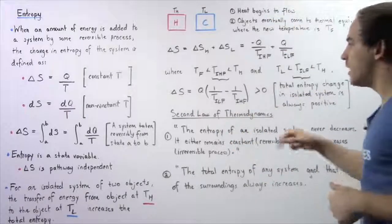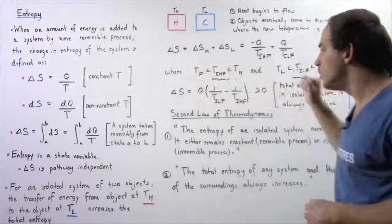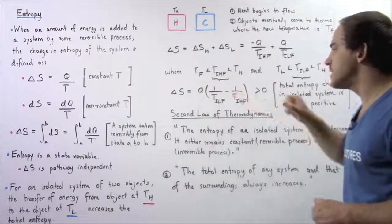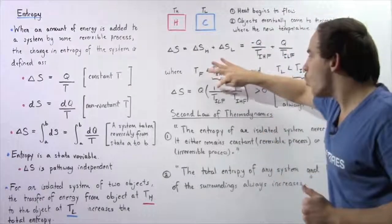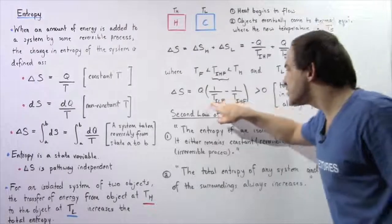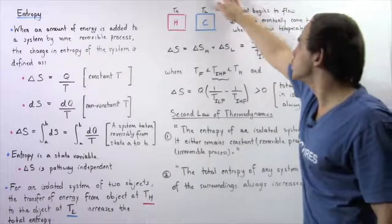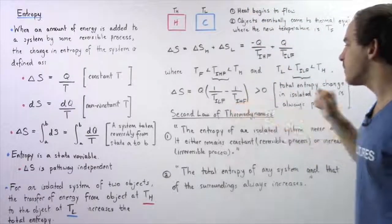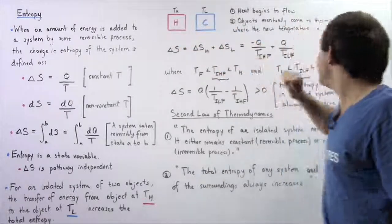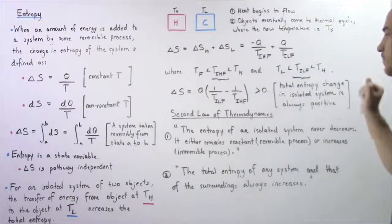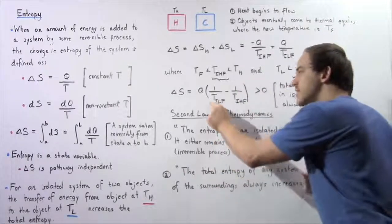We get the following result. The change in entropy ΔS is equal to Q multiplied by the difference of the two fractions: 1 divided by the intermediate temperature of the cooler object (between the final temperature and TL), minus 1 divided by the intermediate temperature of the hotter object (between TH and the final temperature). Notice this lower denominator is greater than the other.